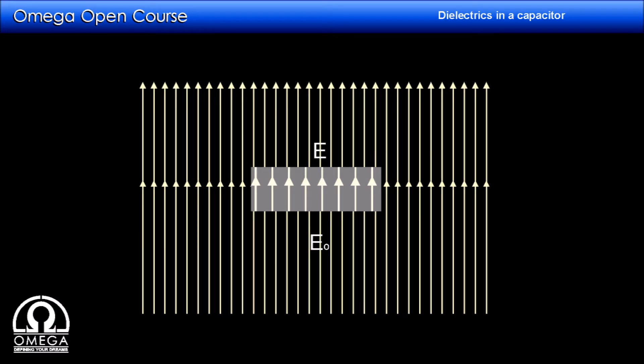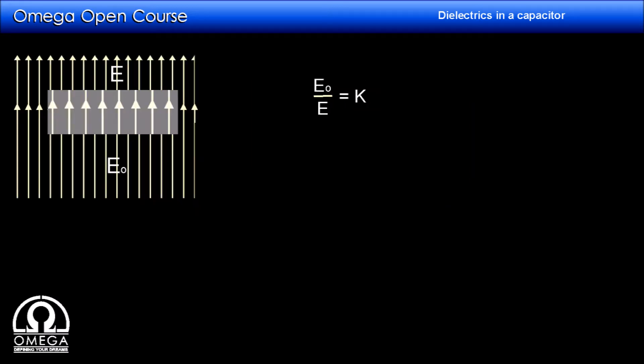We know that when a dielectric is kept in an electric field, the electric field inside the dielectric is less than that in its surroundings. Let us put a dielectric in a region having uniform electric field E0 and assume the electric field inside the dielectric is E. The ratio of E0 and E is known as the dielectric constant, or relative permittivity, of the material. If the dielectric constant is K, then E0 divided by E equals K, which implies E equals E0 divided by K.